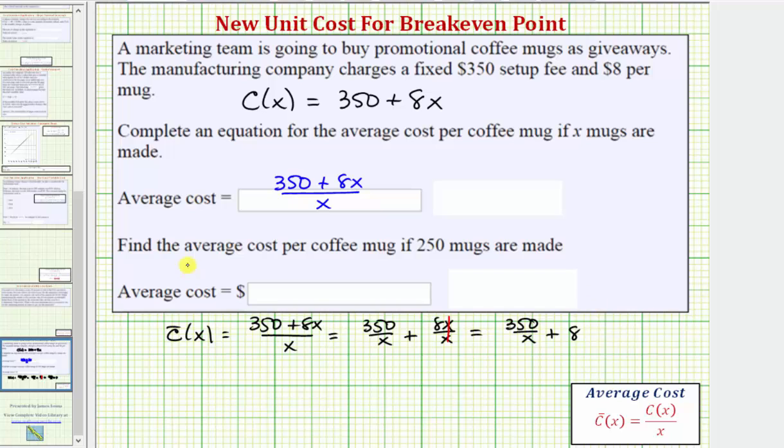Now for the second part we're asked to find the average cost per coffee mug if 250 mugs are made, meaning x equals 250. So we want to determine the value of c̄(250).